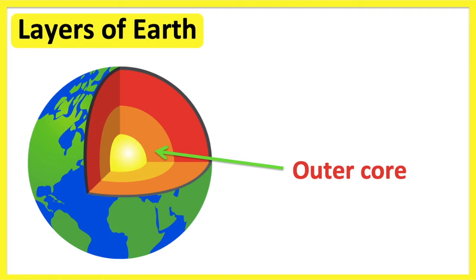The outer core is the layer which surrounds the inner core. It's a liquid layer made up of iron and nickel.